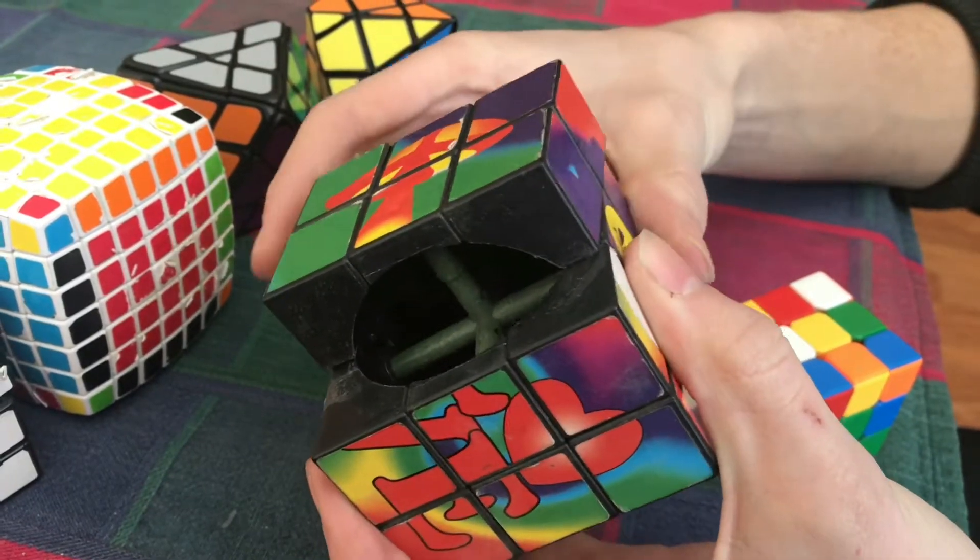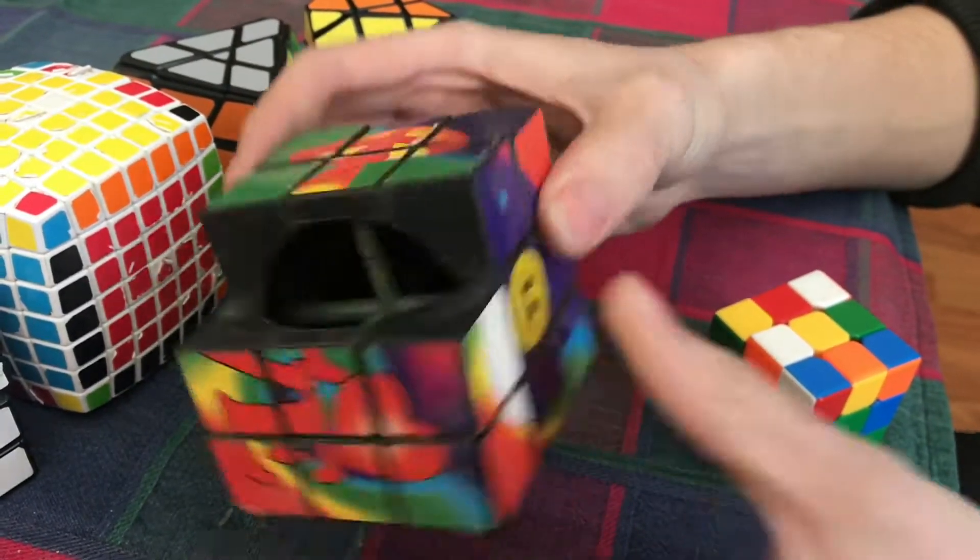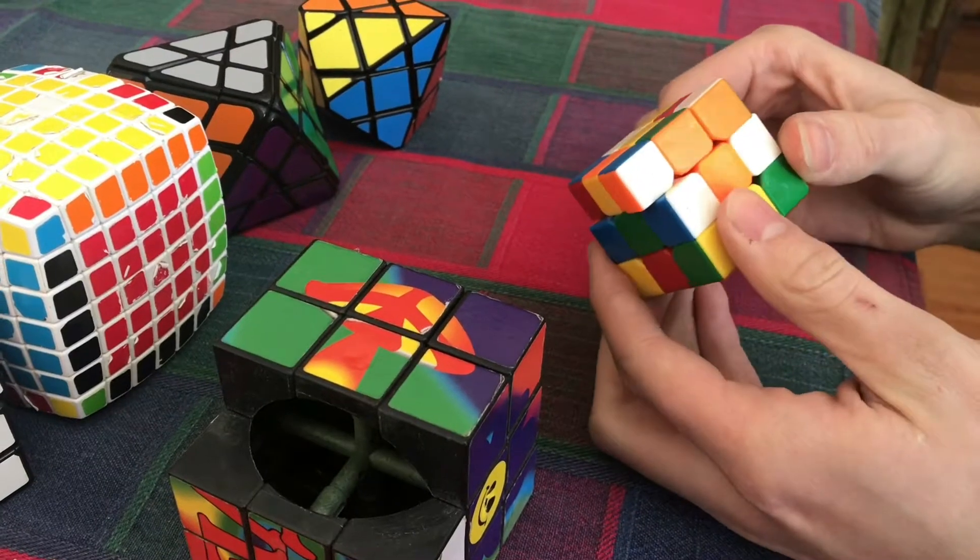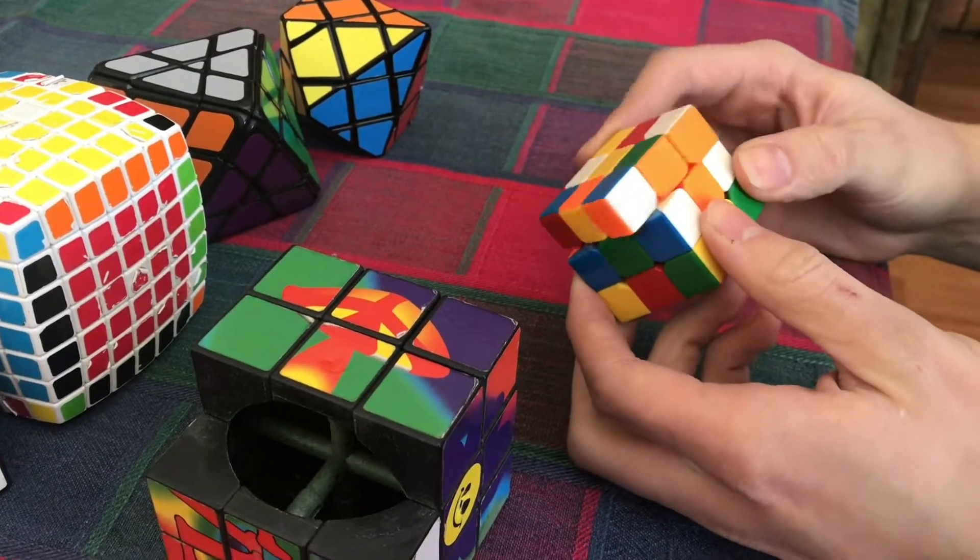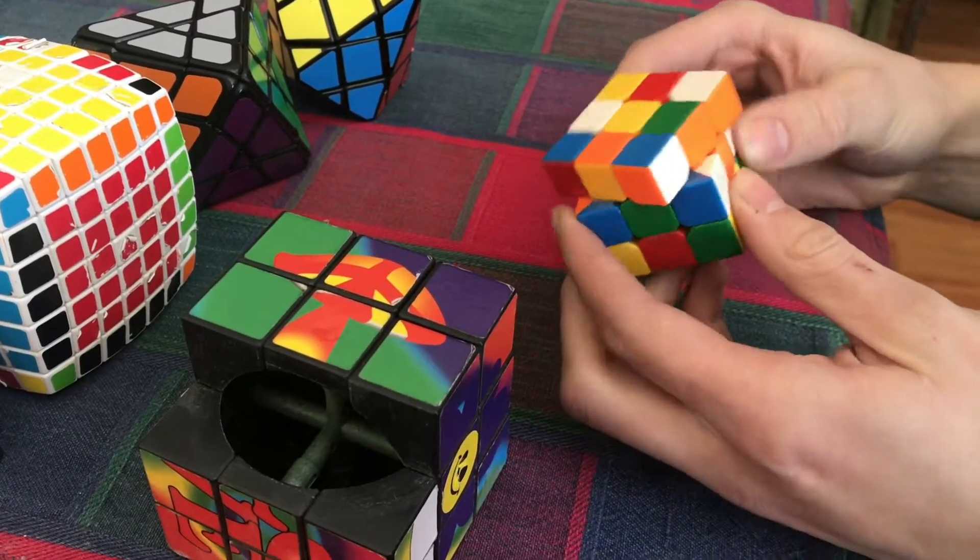It makes it faster to solve. Like right there I can't do anything. But on a cube like this I can rotate it this much and it'll still flip. It depends on which way you're going.